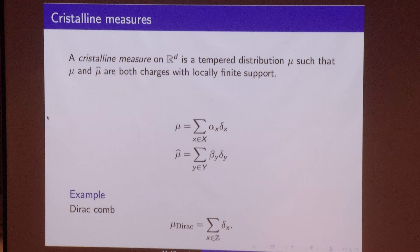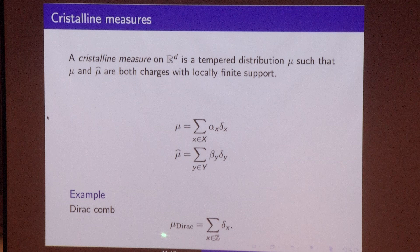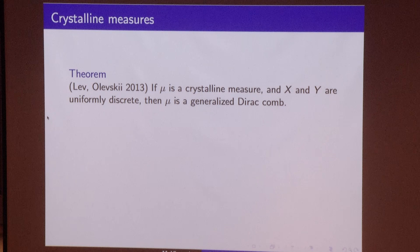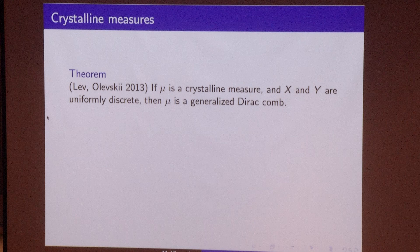One can wonder whether such distributions exist. One example would be the Dirac comb, which in dimension one is just a sum of delta functions concentrated at integers — of course, we know that this distribution is somehow an eigenfunction of the Fourier transform. There is a recent theorem by Lev and Alevsky which says that if we have a crystalline measure and both sets — the support of the measure itself and the support of its Fourier transform — are uniformly discrete, meaning the distances between points in the support are bounded from below, then mu has to be a generalized Dirac comb.